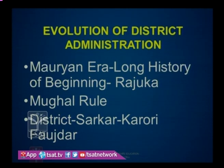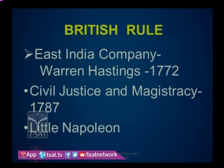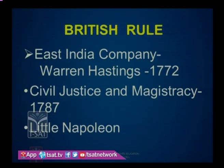The district as a territorial unit of administration has a long history beginning with the Mauryan era. Mauryans were the first to constitute the district as a territorial unit of administration, headed by the Rajuka. During the Mauryan era, provinces like Ujjain and Swernagiri were considered as the basic geographical territorial unit. During British rule, the present-day district administration and the office of district collector came into existence under the British East India Company. This office was created in 1772 by Warren Hastings, the then Governor-General of India. In 1787, the district collector was responsible for maintenance of civil justice and magistracy, thus playing a dual role. Hence, he was described as 'little Napoleon'.